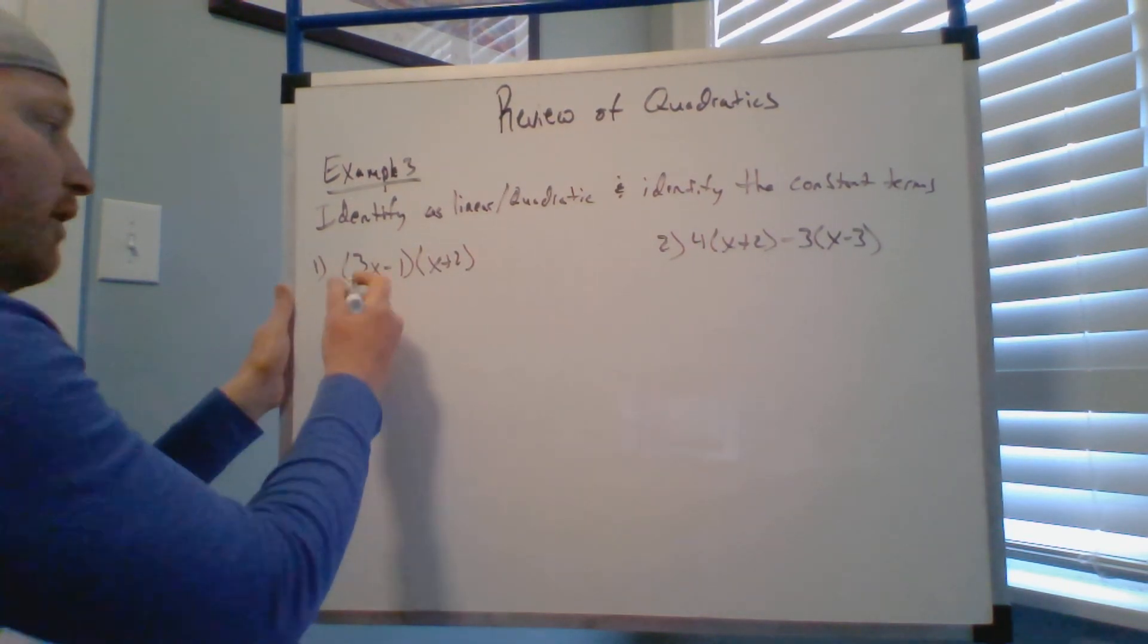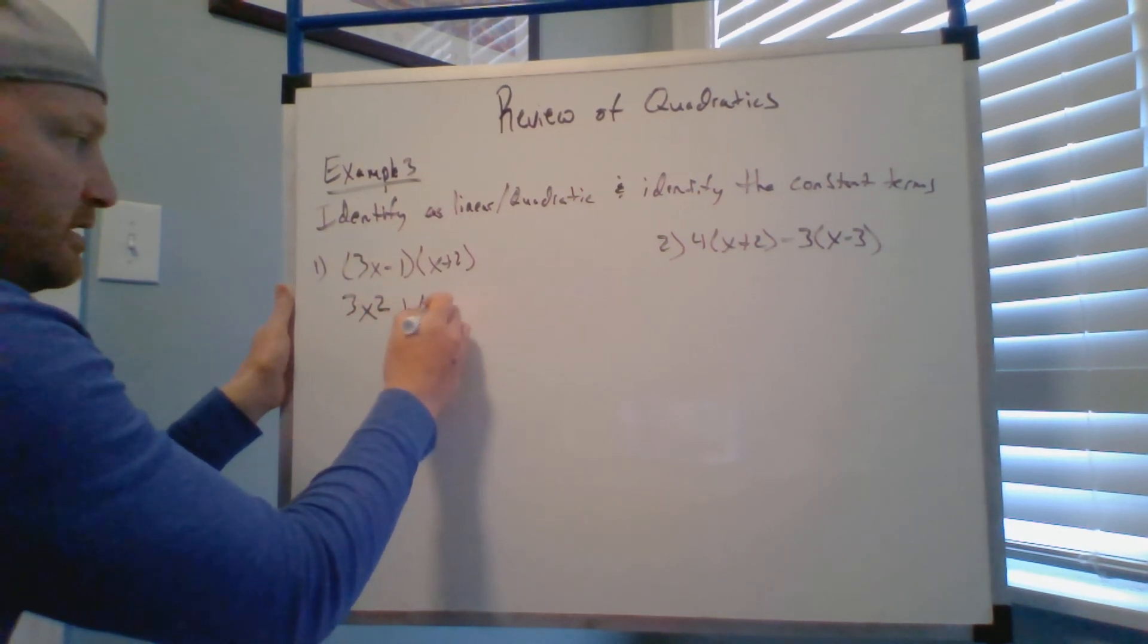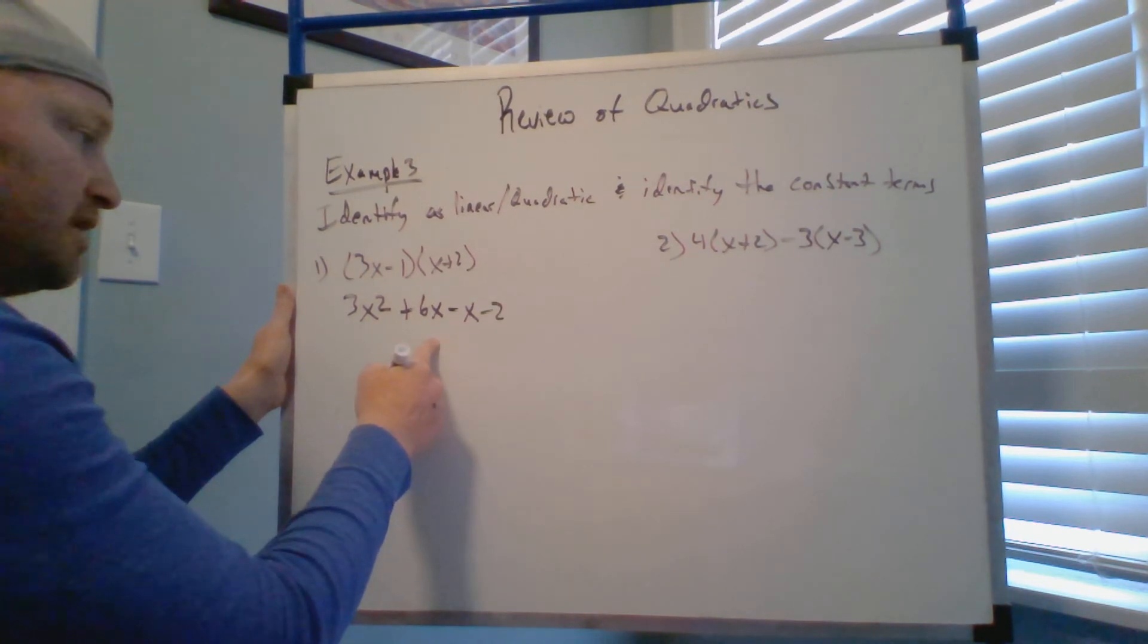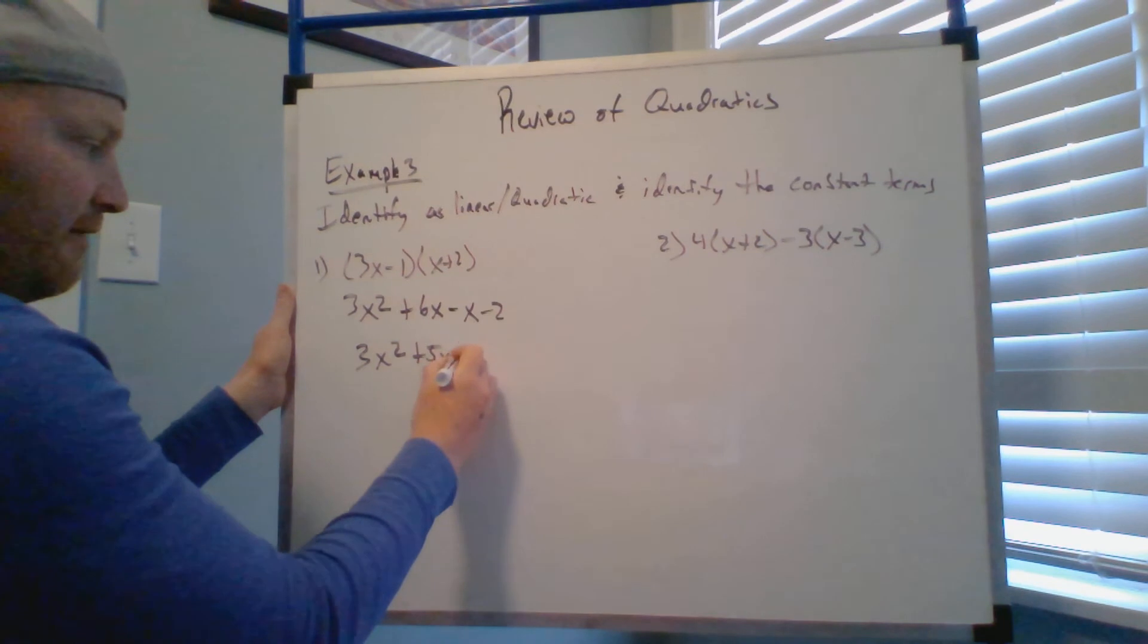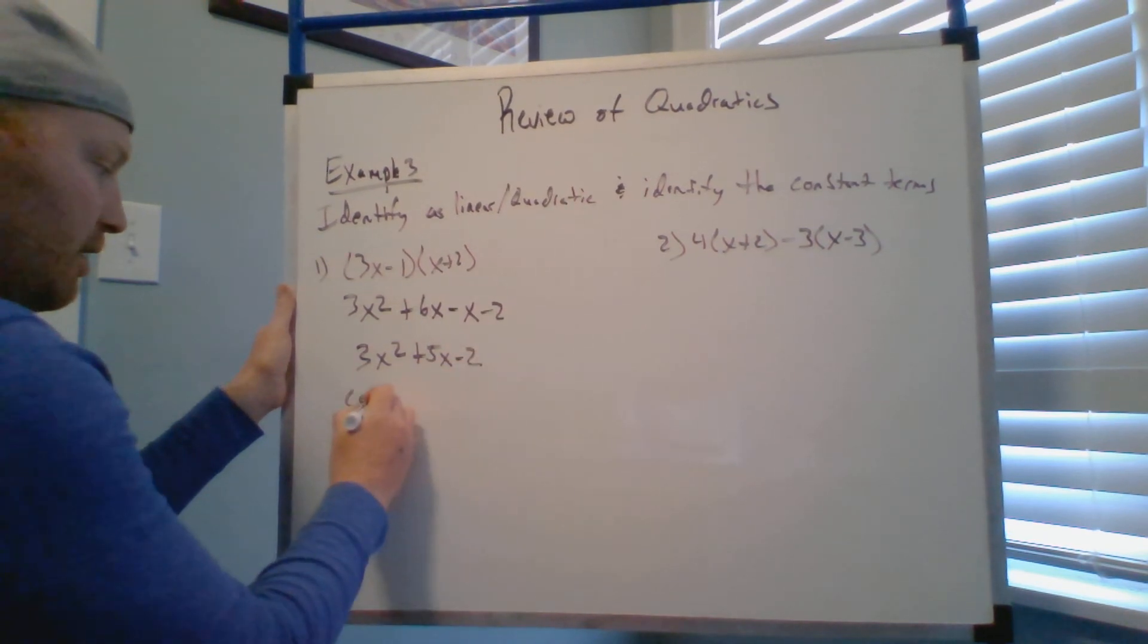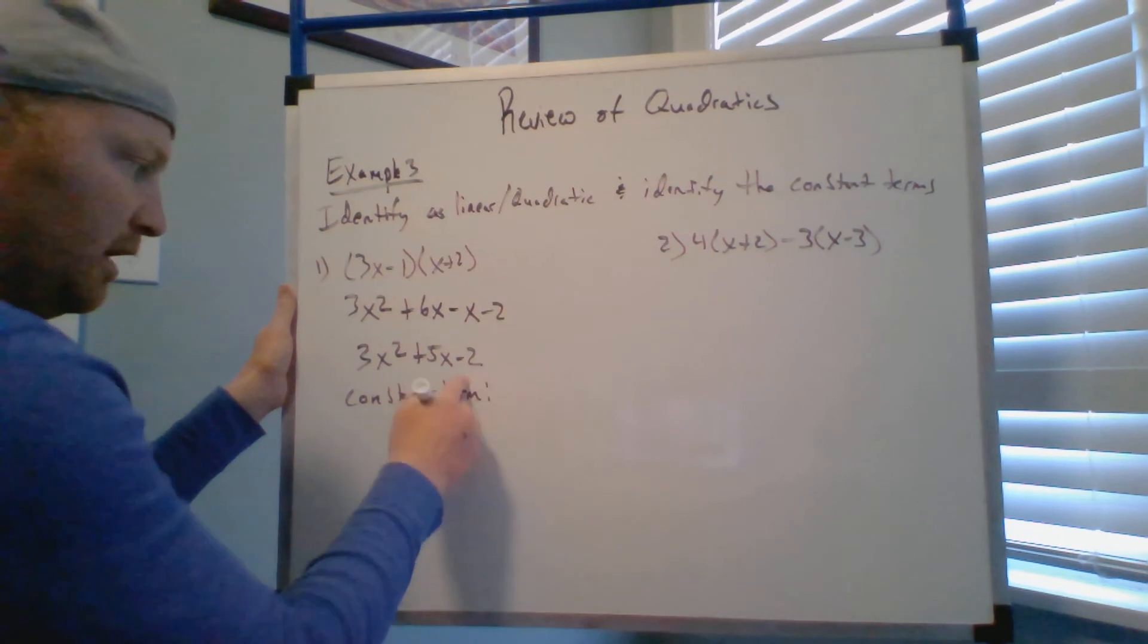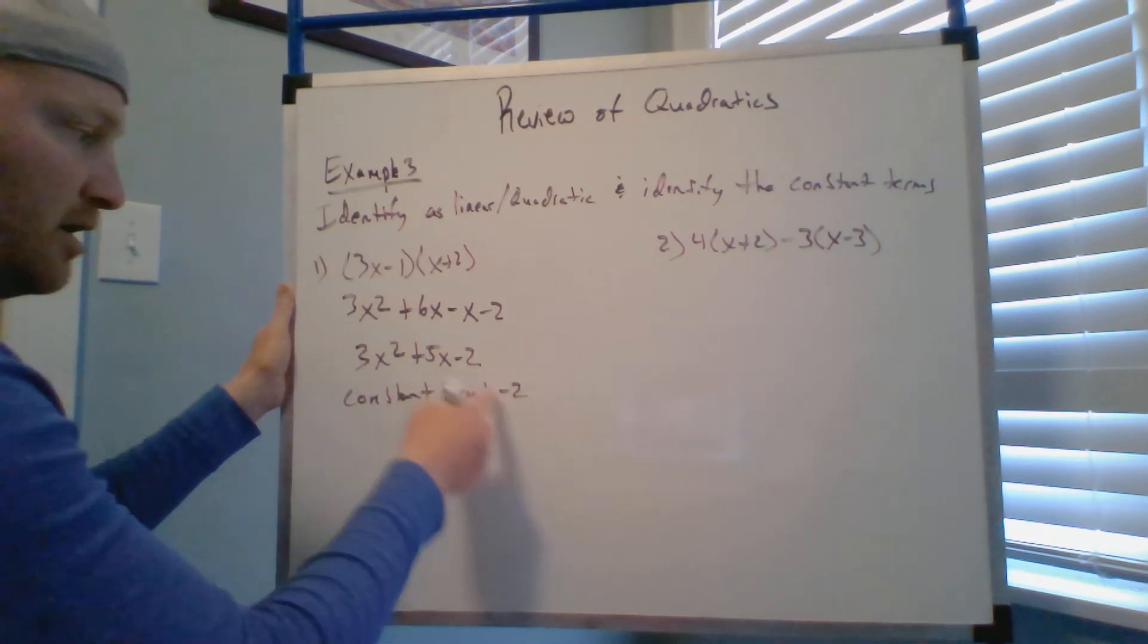So carry out foil, you're going to get 3x squared plus 6x minus x minus 2, which now simplifies to 3x squared plus 5x minus 2. My constant term here is the y-intercept, that is a constant term negative 2.